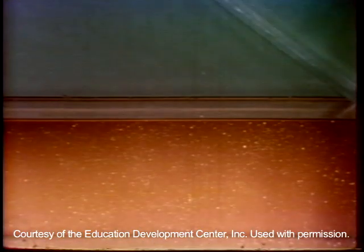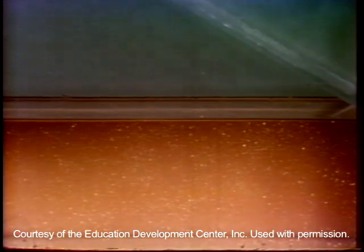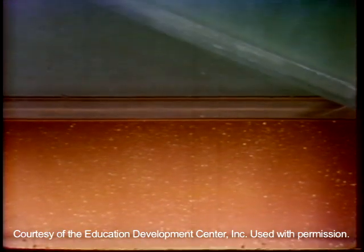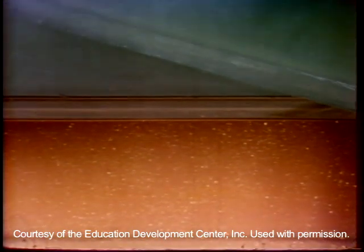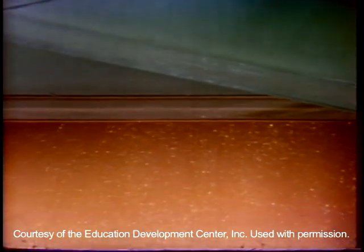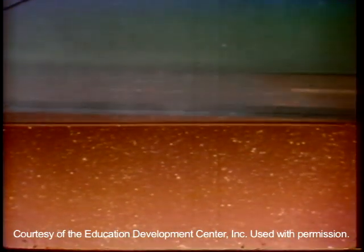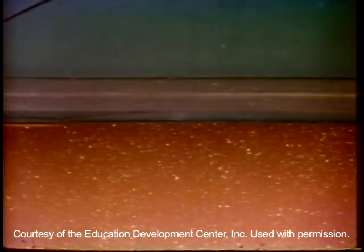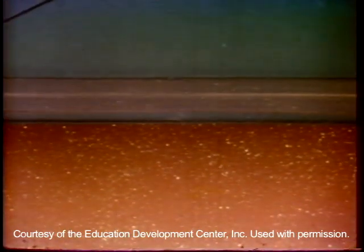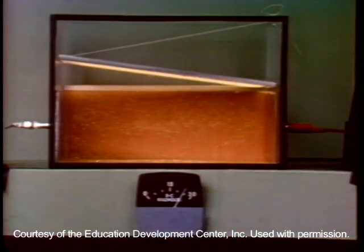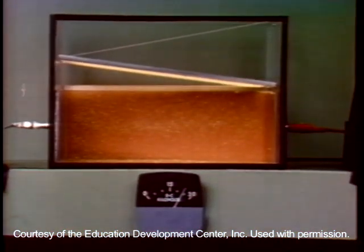As a check to see that the charges really are at the interface, we place a plastic sheet on the surface. The sheet prevents the interface from moving, while not altering the field in the fluid volume.